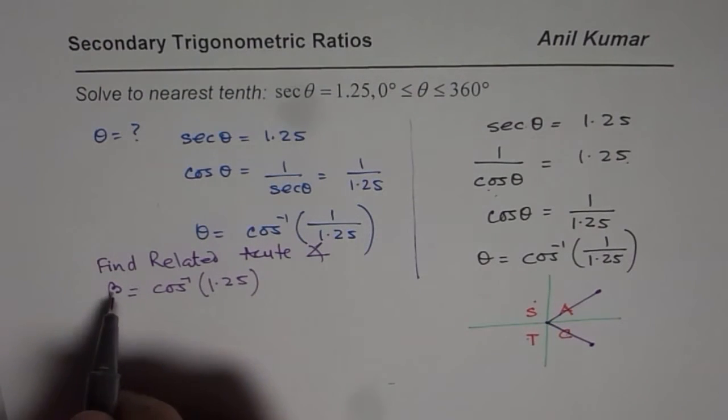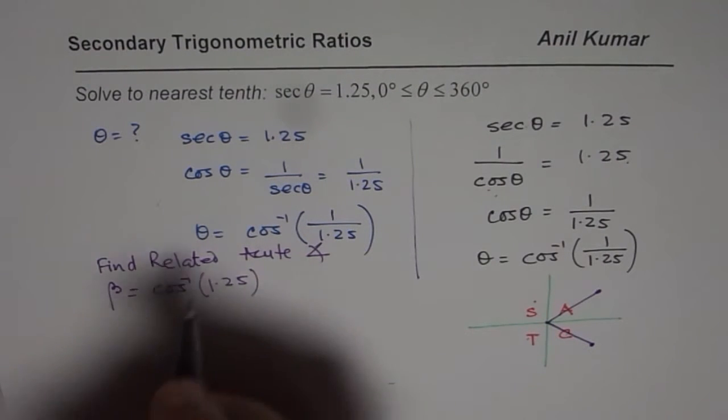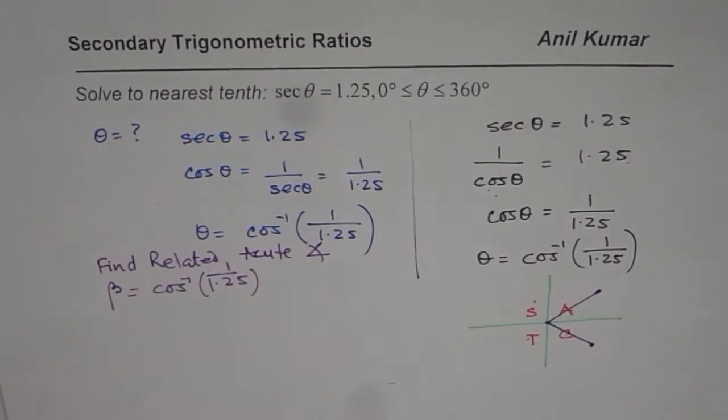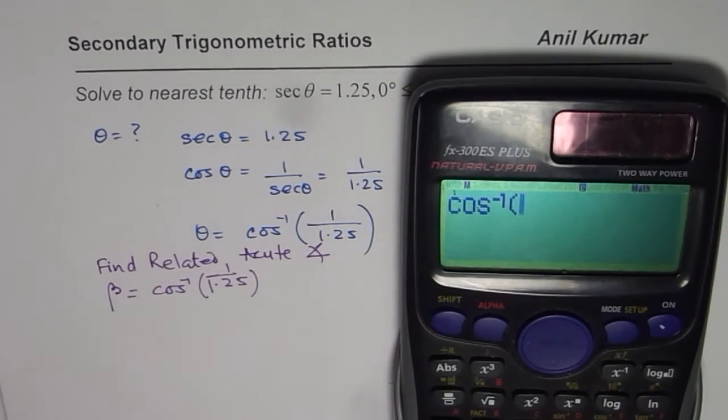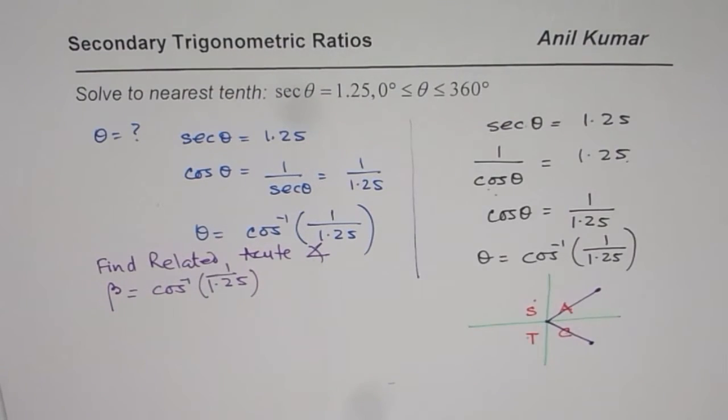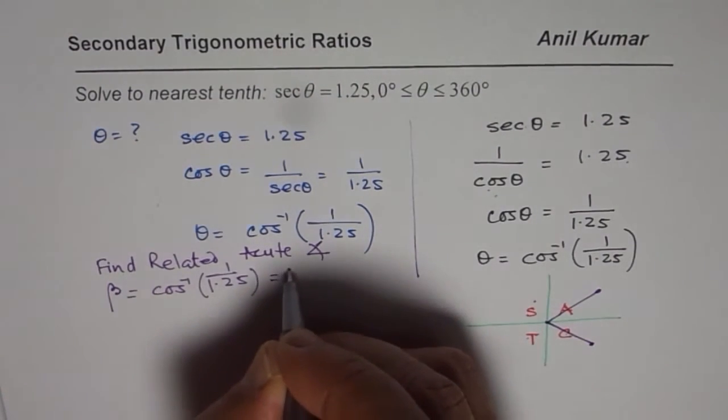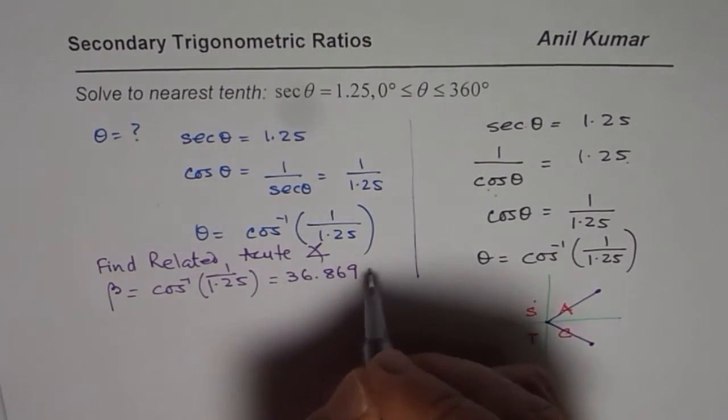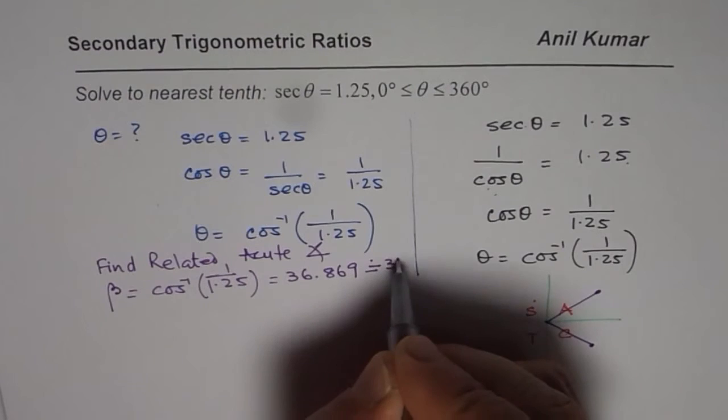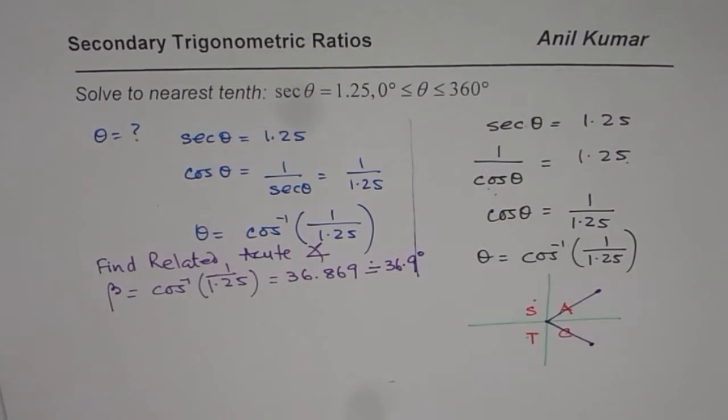Now, what is cos inverse of 1 over 1.25? So let us find that out. We will use second function, shift cos inverse of 1 divided by 1.25 bracket close equals to 36.869. So we get this as 36.869 something. Let us round this to 36.9 degrees.